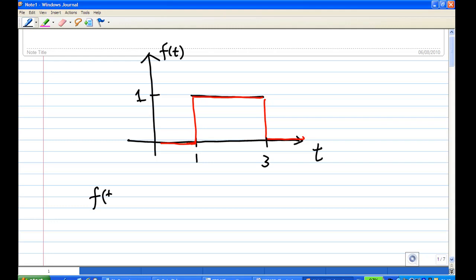In fact, f(t) is equal to just u(t-1) minus unit step function u(t-3). This will give you the function value 1 between 1 to 3 and 0 otherwise.